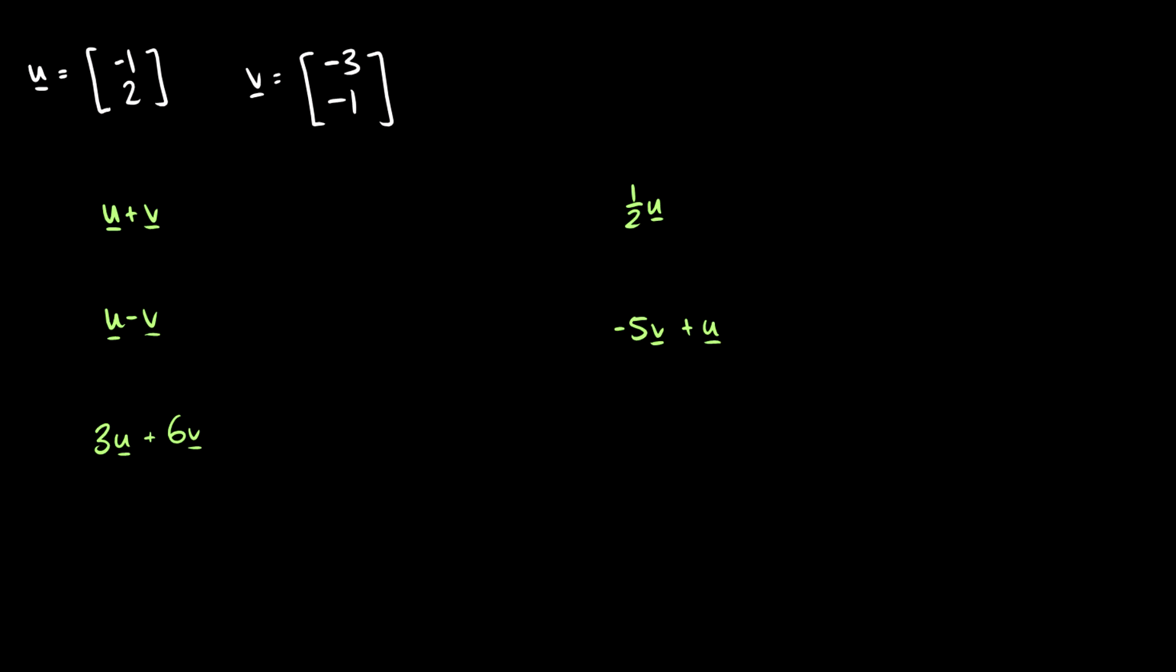So let's do some practice here. u is negative 1,2, and v is negative 3, negative 1. Let's add these two vectors together. So this is going to be negative 1 minus 3 for the first entry, and 2 minus 1 for the second, which will be negative 4,1. If we draw these vectors, we're going to end up at that spot.